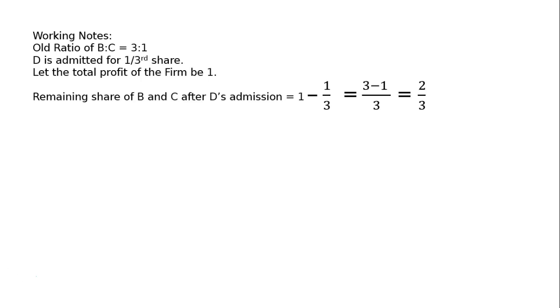Let the total profit of the firm be 1. Remaining share of B and C after D's admission: 1 minus 1/3 = 2/3. B's new share is 2/3 multiplied by 1/2. This two-thirds combined share of B and C is shared equally — one-half to B and one-half to C.